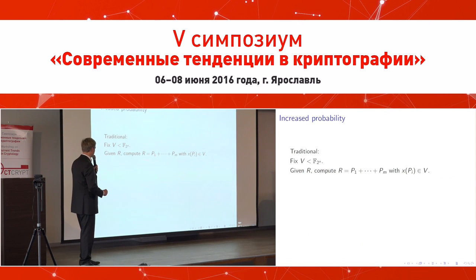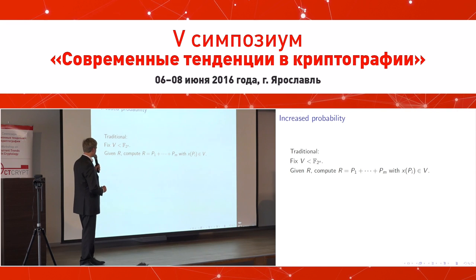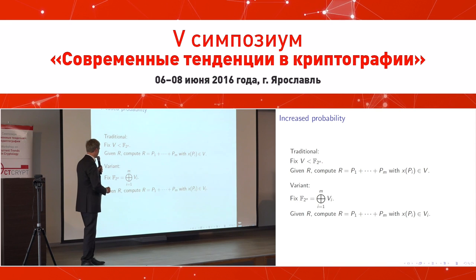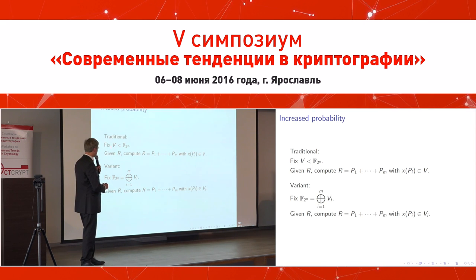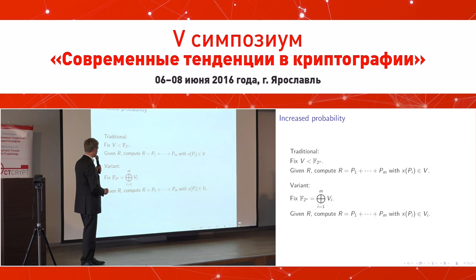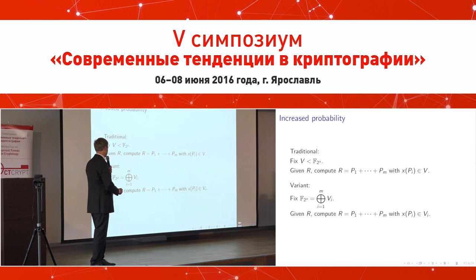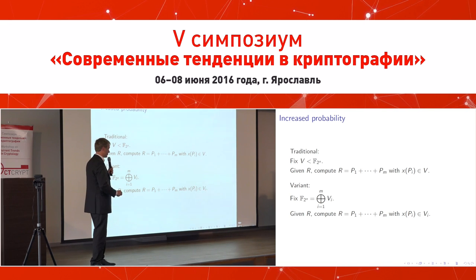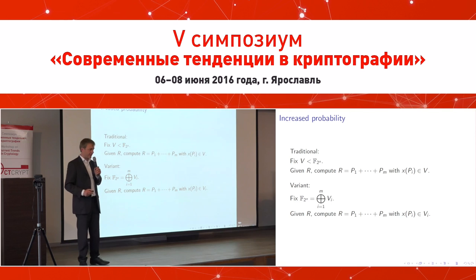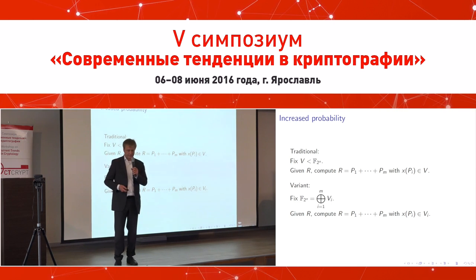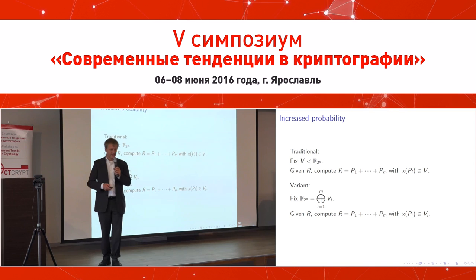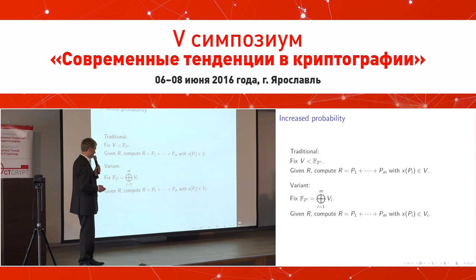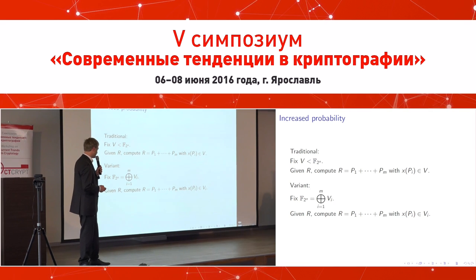My variant differs from what Semaev does. He fixes a sub-vector space and considers decompositions. I instead consider several vector spaces and do the decompositions across them. This eliminates the repetition problem because all X coordinates lie in different spaces, so symmetry is no longer possible.